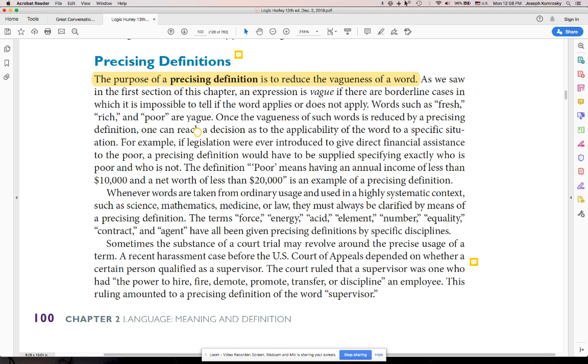So let's give you an example. Words such as fresh, rich, poor, are vague. What do you mean by poor? Do you mean like five bucks that I got in my pocket right now? Or do you mean like a hundred? Do you mean like a thousand? I can't tell. So then if you precise on that, you say, I mean by poor, less than a dollar.